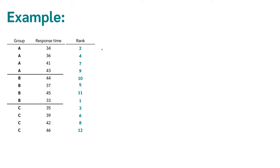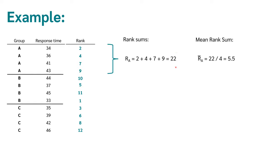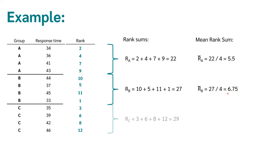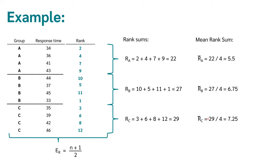In a second step, we calculate the rank sum and the mean rank sum. For the first group, the rank sum is 2 + 4 + 7 + 9 = 22, and with 4 people in the group the mean rank sum is 22 ÷ 4 = 5.5. For the second group, the rank sum is 27 and the mean rank sum is 6.75. For the third group, the rank sum is 29 and the mean rank sum is 7.25. The expected value of the rank sums — if there is no difference between groups — would be 6.5 for each group. We interviewed 12 people, so the number of cases is 12.